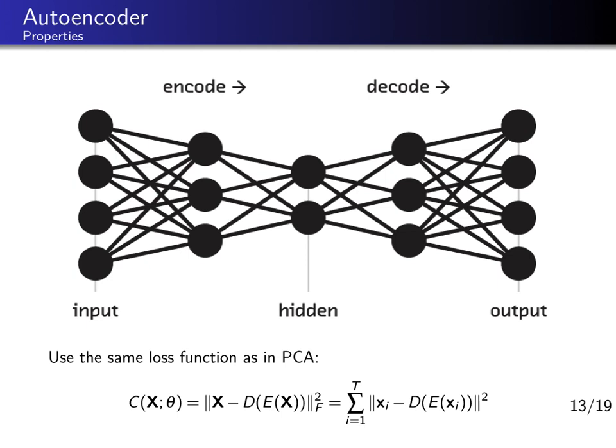The first part of the autoencoder, which projects from the large input dimension to the small latent dimension, is called the encoder, and the second part is called the decoder. The loss function minimizes the reconstruction loss. We take the original dataset x — which could also be a batch of data — and compare it with the decoded-encoded x: we put x through the encoder, then through the decoder, and compare the result with the original x. We then compute the Frobenius norm of this error and minimize it.